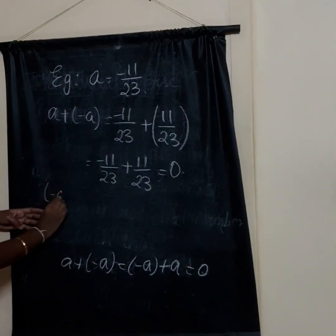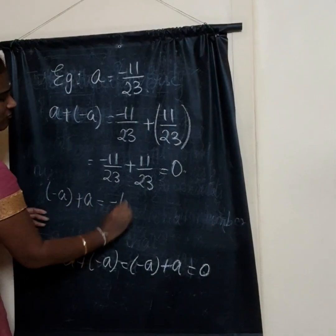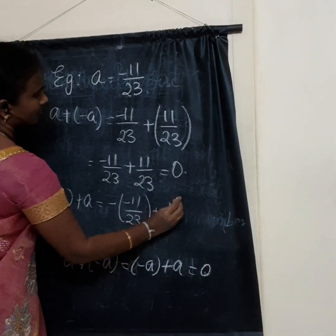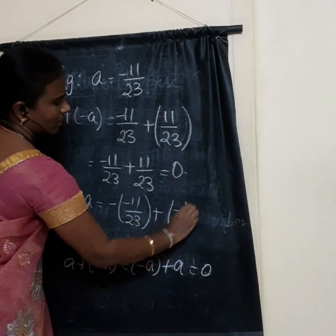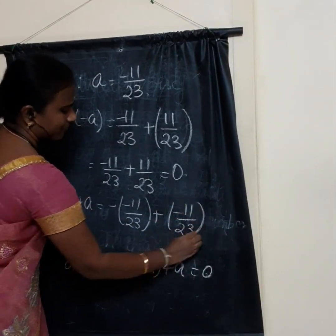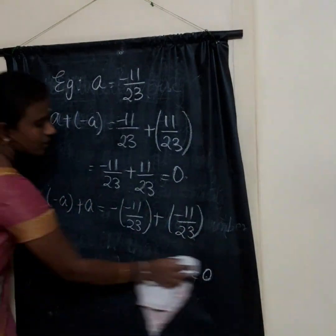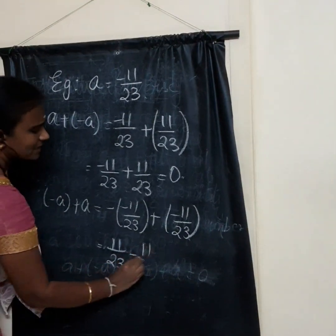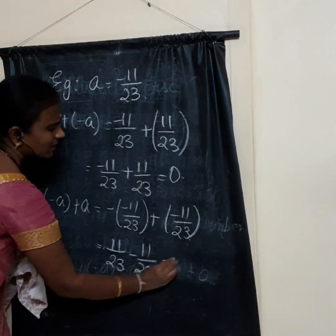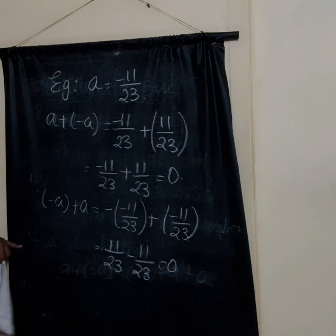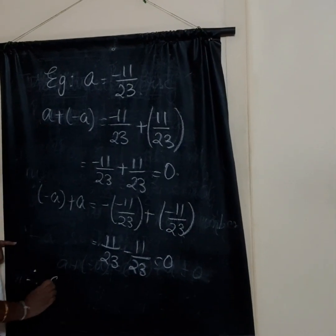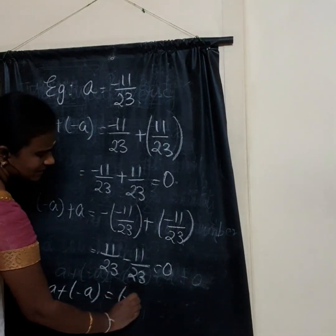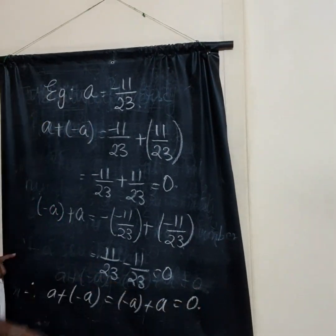What is minus A plus A? That is minus of minus 11 by 23 plus minus 11 by 23, which gives 11 by 23 minus 11 by 23, which is 0. Therefore, A plus minus A is equal to minus A plus A is equal to 0.